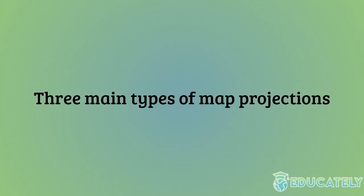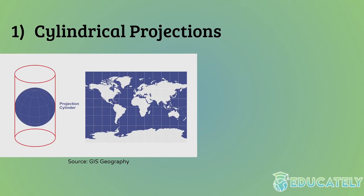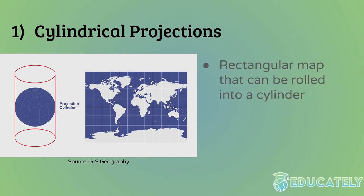There are three types of map projections based on how maps are created. The first type is known as a cylindrical projection. These explanations get kind of mathematical, so this might not make full sense at a middle school level — you don't have to know the actual math behind this. I'm just going to give the basics.